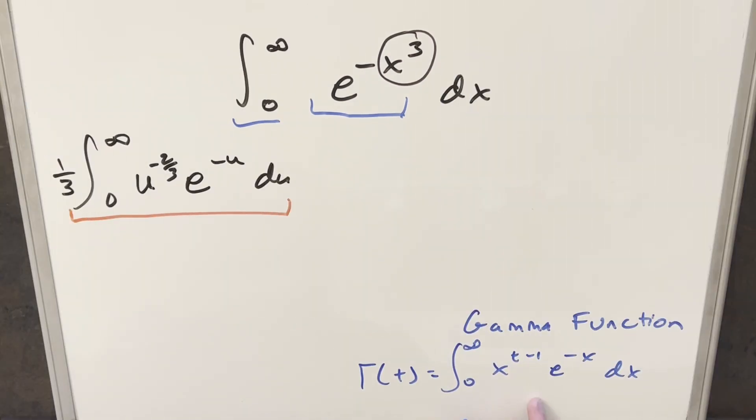We have our formula for the gamma function over here to the right. Our variable is u instead of x, but the bounds are the same. The gamma function is a generalization of the factorial to real numbers. For gamma of t, when t is an integer, this equals (t-1)!.